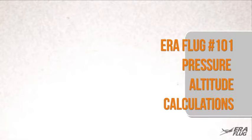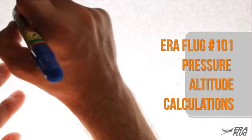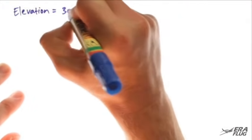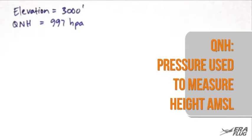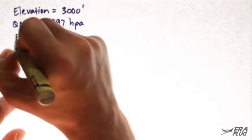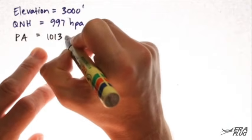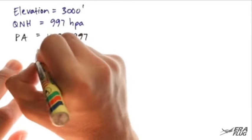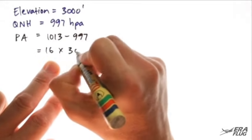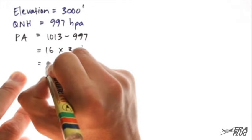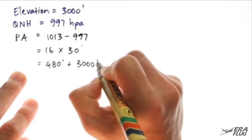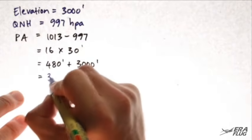We're going to go on to example 3 now, and in this example we'll introduce a pressure altitude into the calculation. If you need to know how to calculate your pressure altitude, please refer to the Ereflug tutorial number 1. We'll keep the elevation at 3,000 feet and assume a QNH of 997 hectopascals. The QNH is a pressure value used to measure height above mean sea level. So our pressure altitude is 1013 minus 997 hectopascals, equals 16, times 30 feet — remembering that 1 hectopascal drop in pressure equals 30 feet gain in altitude — giving 480 feet, plus our elevation of 3,000 feet, for a total of 3,480 feet pressure altitude.